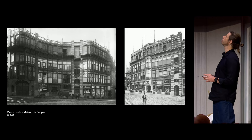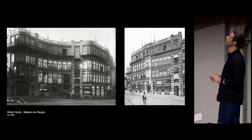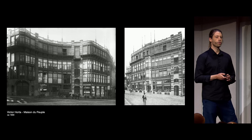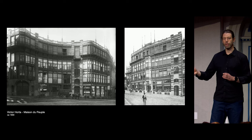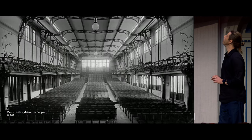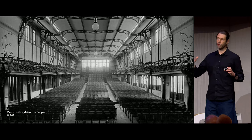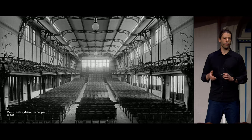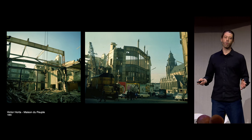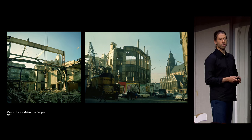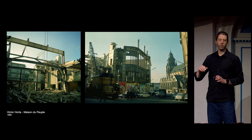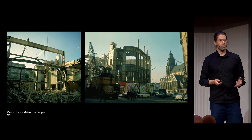This is the Maison du Peuple. The Belgian Workers Party commissioned Victor Horta at the end of the 19th century to design a building hosting the party itself plus facilities for the working class. The main feature was a great conference room at the top, like a zeppelin hanging in the air. In 1965, the Socialist Party no longer needed the building, sold it, and it was knocked down. It was the 60s — everybody was looking toward the future, not the past — and it was not considered heritage worth keeping.